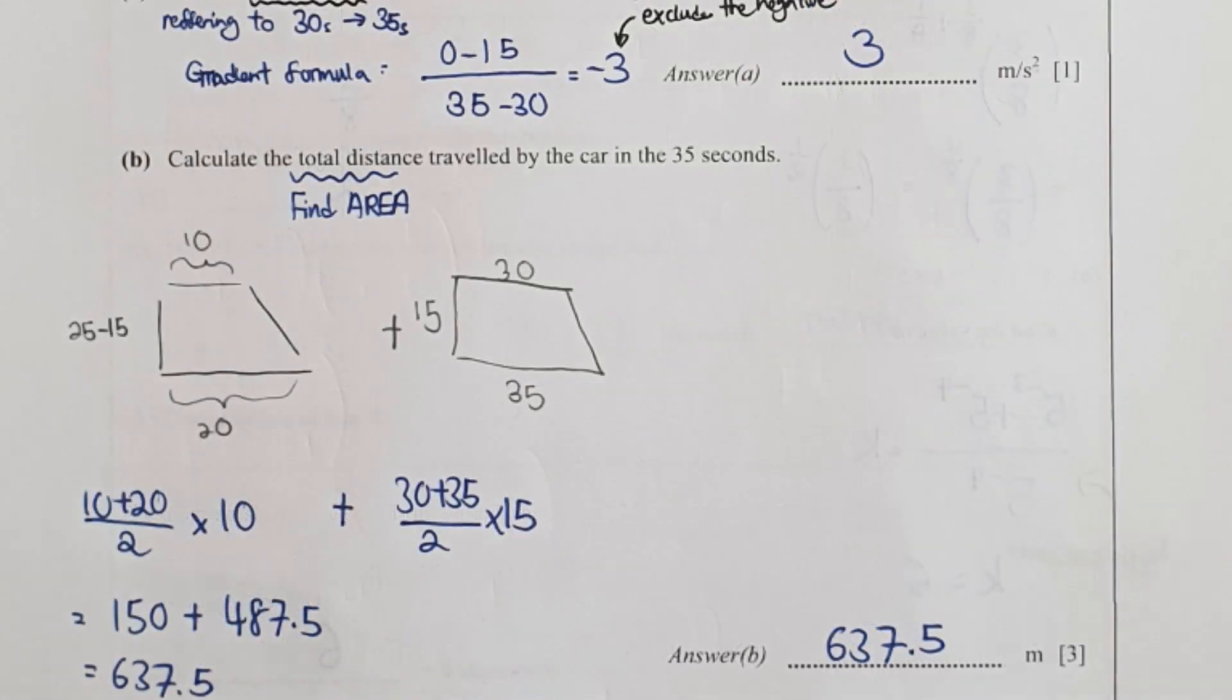Calculate the total distance. Simply find the area of this particular shape. I have a top and bottom of 10, 20 divided by 2 times 10, plus the other one which is a larger trapezium, 30 plus 35 divided by 2 times 15. The final result is 637.5.